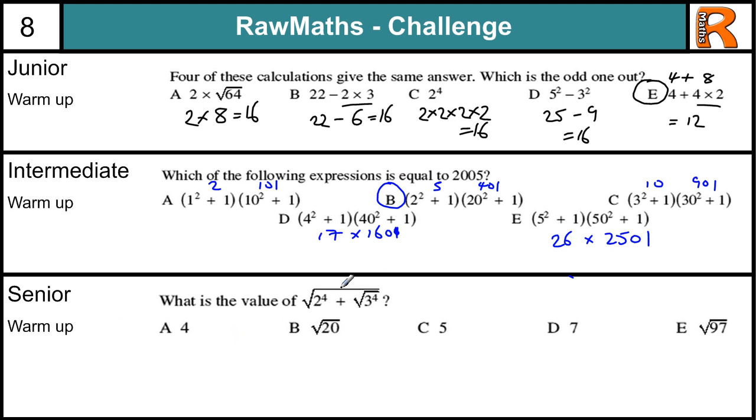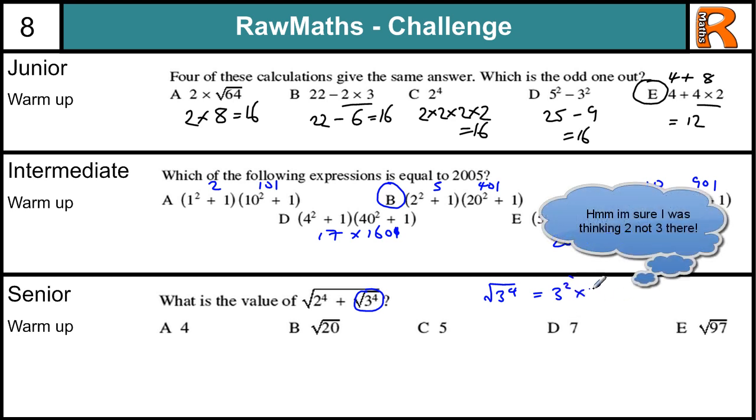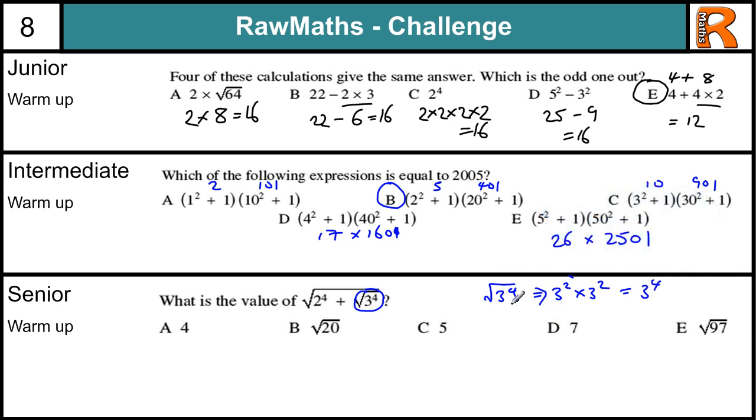And the senior one, what is the value of this expression? So we've got square roots. Always start in the deepest part of the question, when you've got multiple square roots or multiple fractions and things like that. So we're going to start down here, 3 to the power of 4, square rooted. Now the square root of anything to the power of 4 is just that thing to the power of 2, because 3 squared times 3 squared is 3 to the power of 4. So the square root of 3 to the power of 4, what times by itself is 3 to the power of 4 is 3 squared. So the square root of 3 to the 4 is 3 squared.